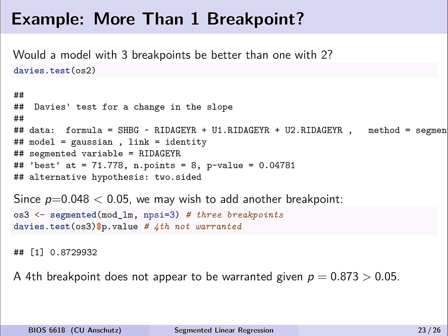After fitting two breakpoints, a natural question is whether we need three. Davies' test on os2 gives a p-value less than 0.05, suggesting it's worth adding a third breakpoint. We then test whether a fourth breakpoint is warranted, and the resulting p-value is 0.873 — much larger than 0.05 — so it does not warrant adding another breakpoint.